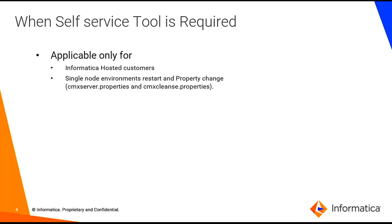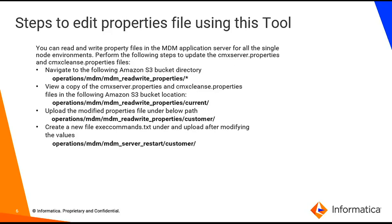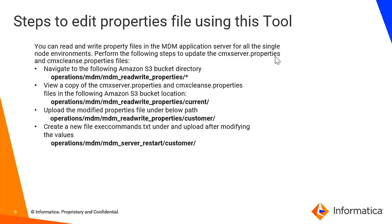For the steps to edit properties files, we are referring to CMX server properties and CMX cleanse properties. We can read and write these properties files in the MDM application server for which we are performing the restart. After logging into S3, we navigate to the path: operations > MDM > MDM read-write properties. Under this folder there will be two folders — current and customer. The current folder contains a copy of these files for read purposes. If you want to make changes — such as adding or removing a property — make the edits and upload the file back to the customer folder. To apply the change, we need to restart the application server.